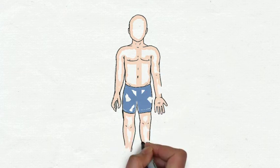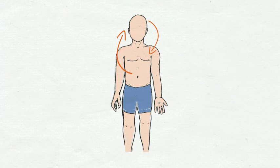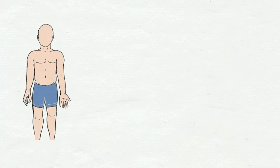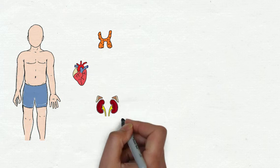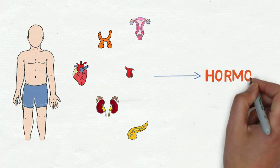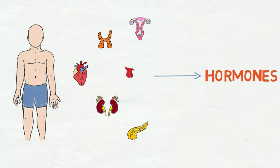The human body is like a giant company whose success and productivity depend on the cooperation of hundreds of departments. Overseeing much of this cooperation is the endocrine system, a group of organs whose job is to make hormones—chemical messengers that travel throughout the body within the bloodstream.